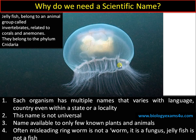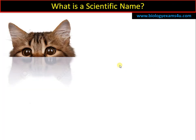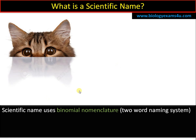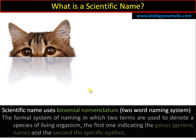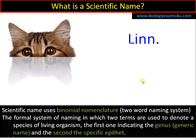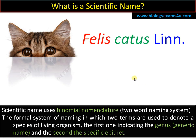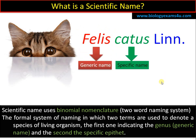To avoid all these things, we have the scientific name. Now, what is a scientific name? Let's take this beautiful cat as an example. Scientific name uses binomial nomenclature, or a two-word naming system. The name of a species is denoted by two names: the first is called the generic name and the second is called the specific name, or specific epithet.